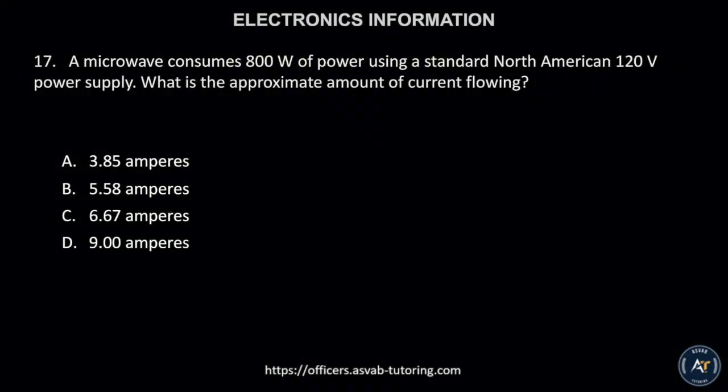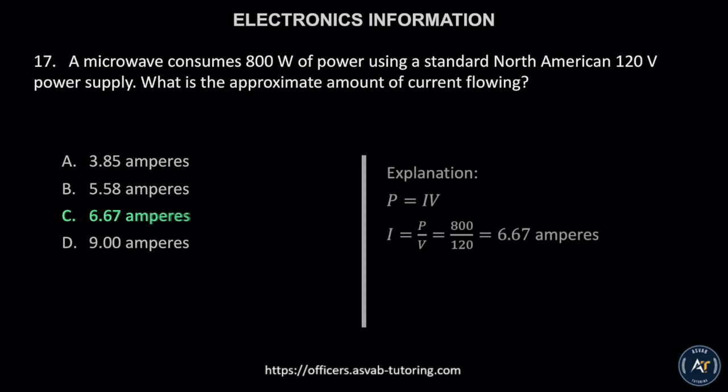Number 17. A microwave consumes 800 watts of power using a standard North American 120-volt power supply. What is the approximate amount of current flowing? A. 3.85 amperes, B. 5.58 amperes, C. 6.67 amperes, or D. 9.00 amperes. The correct answer is letter C, 6.67 amperes. The solution is shown.